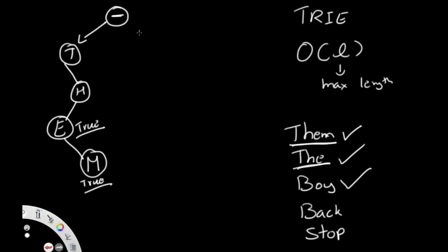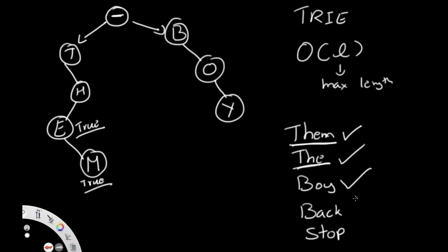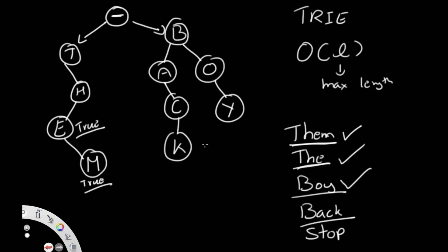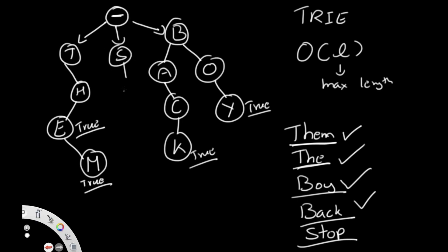Adding 'boy' creates a new branch: B → O → Y. For 'back', we go to the existing B node, which has no child A, so we add A → C → K with K marked as end. Finally, 'stop' adds a new branch S → T → O → P. The ending nodes for each complete word are marked true.